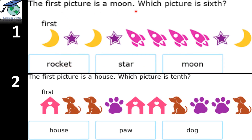The first picture is the moon. Which picture is the sixth? Over here it is written first, so that means you have to start from the left side. First is the moon, then the star, then the moon. We will start counting and stop on the sixth number: one, two, three, four, five, six. The sixth is the rocket. So we will put a happy face.